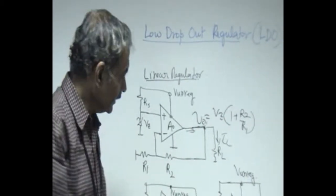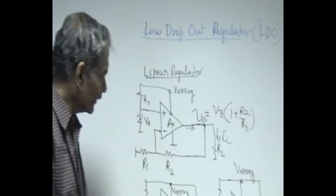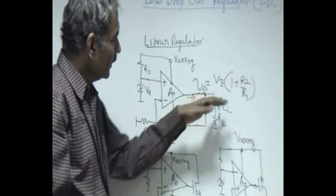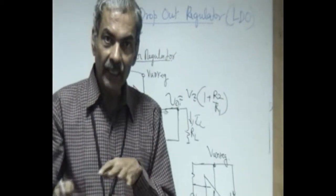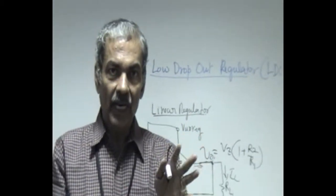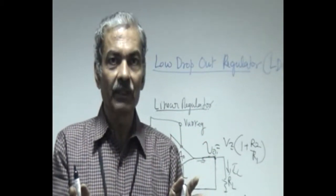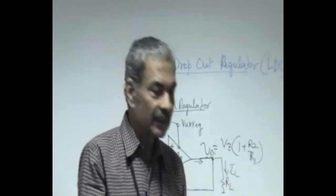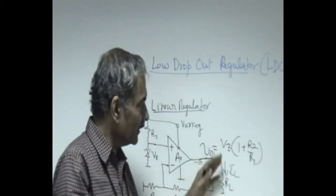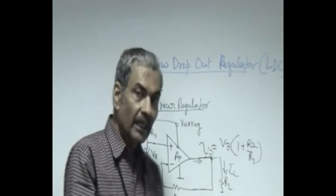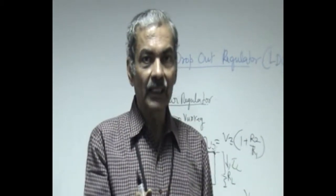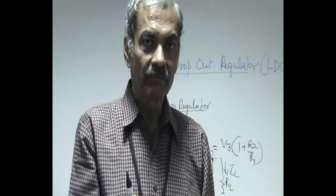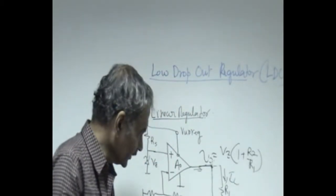These are two large signal parameters which you can measure for this regulator, and then the output impedance, which is a small signal parameter, has to be measured at the frequency at which this is supplying power. So if it is supplying power to a high frequency stage, it is at that frequency that you have to measure the output impedance. That output impedance should be low so that other circuits deriving power from the same supply do not get feedback from this particular high frequency circuit.